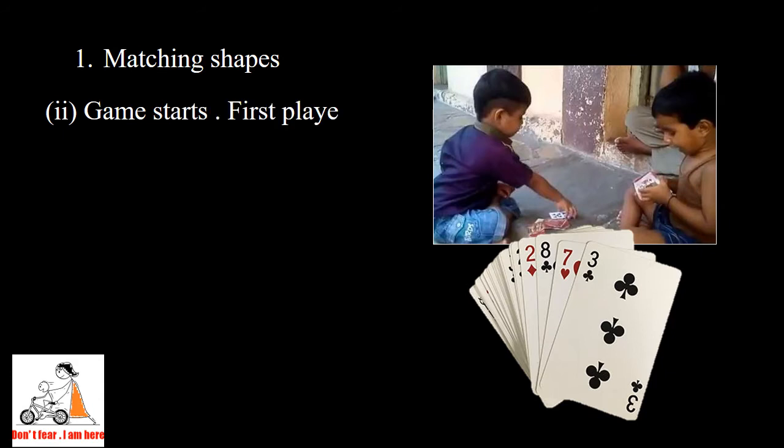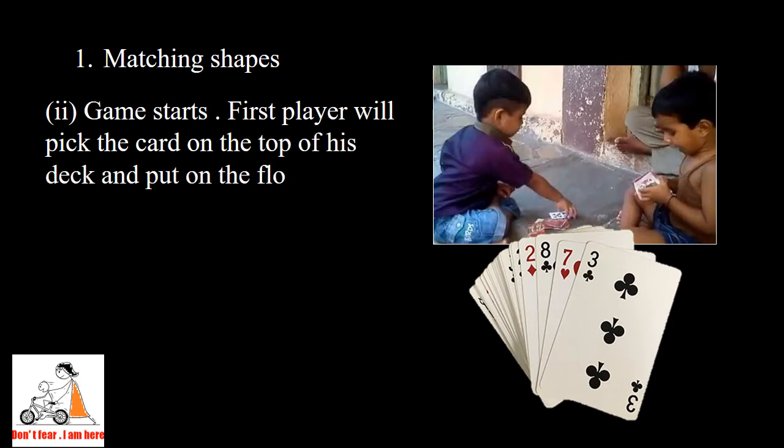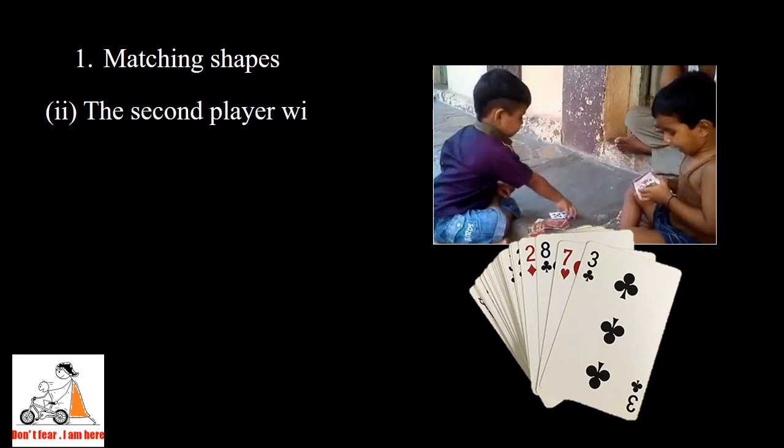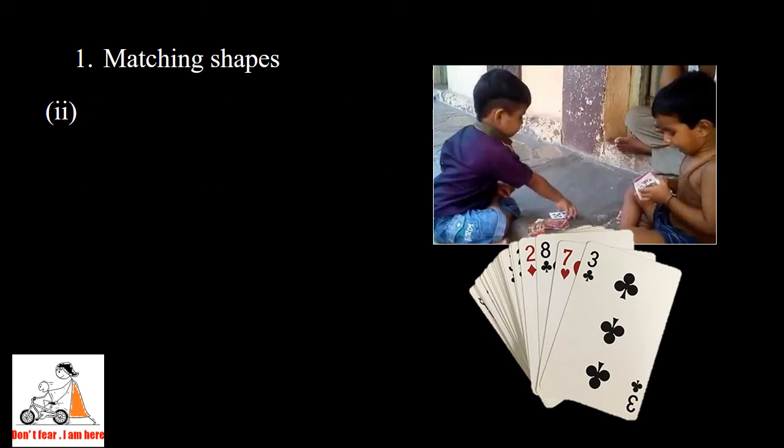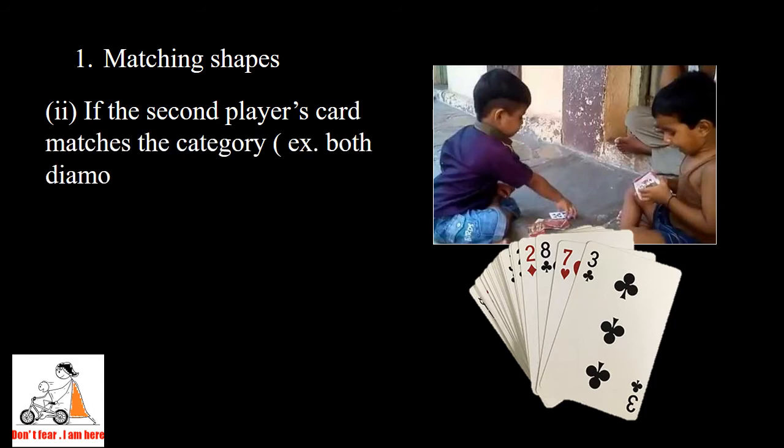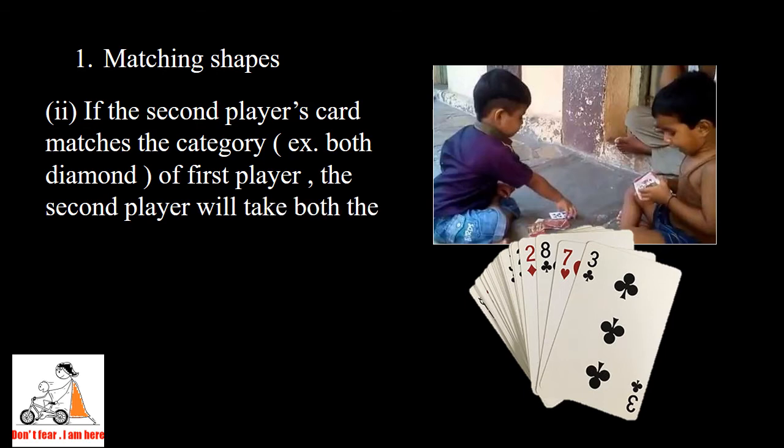Game starts. First player will pick the card on the top of his deck and put on the floor showing the face of the card. The second player will pick his top card and put it on the floor showing the face. If the second player's card matches with category of first one, for example diamond-diamond or hearts-hearts, then second player will take both the cards and keep at the bottom of his deck.